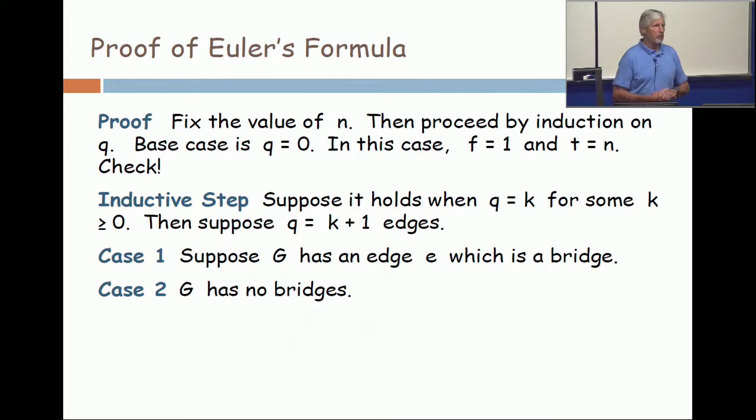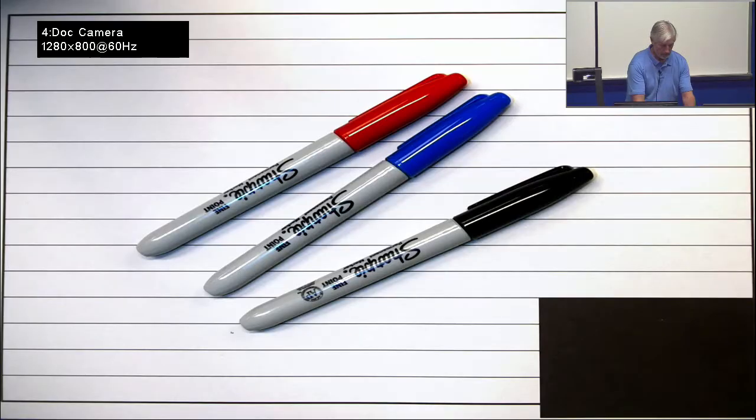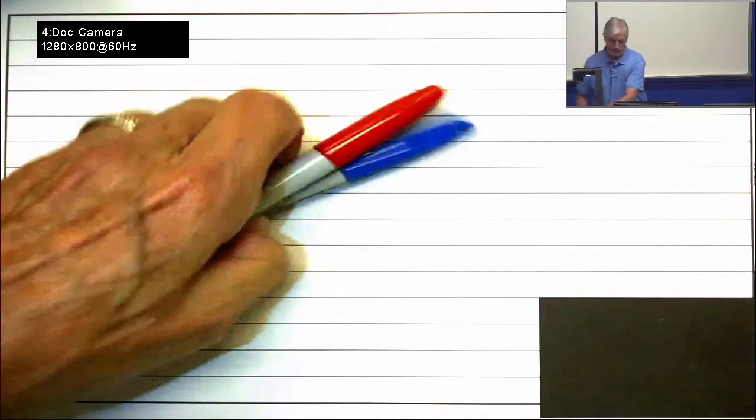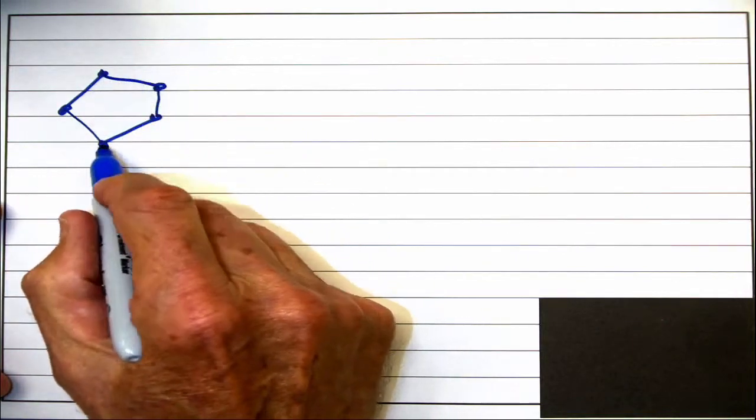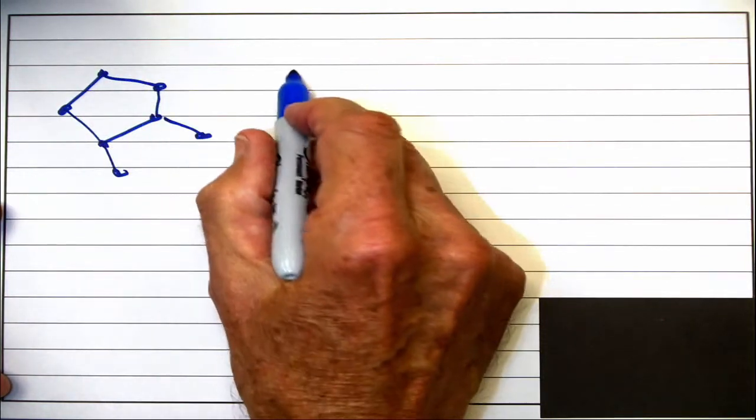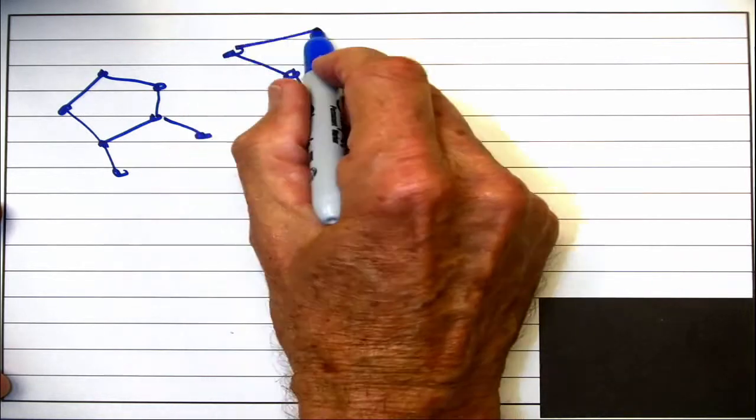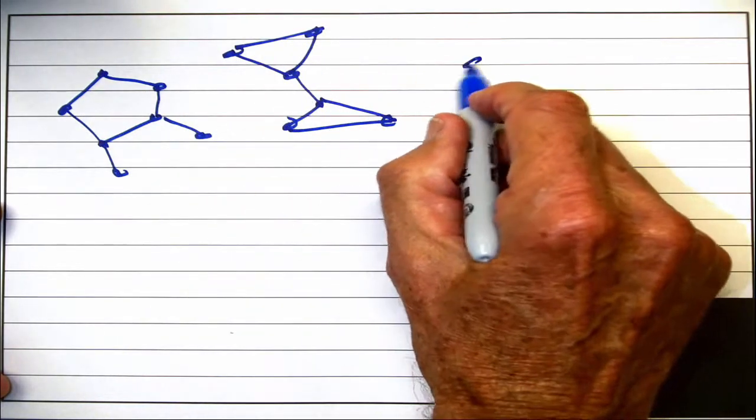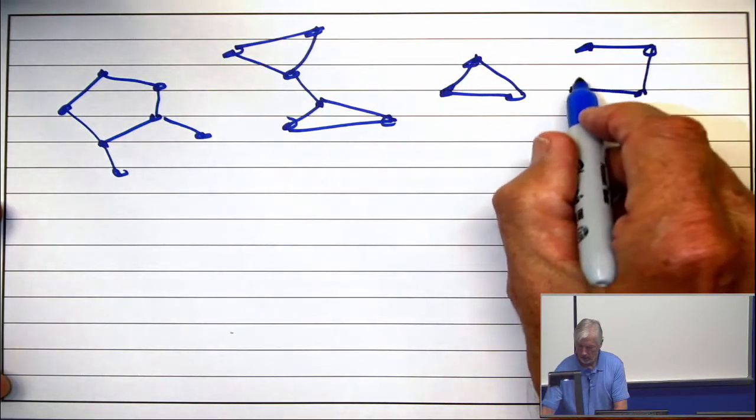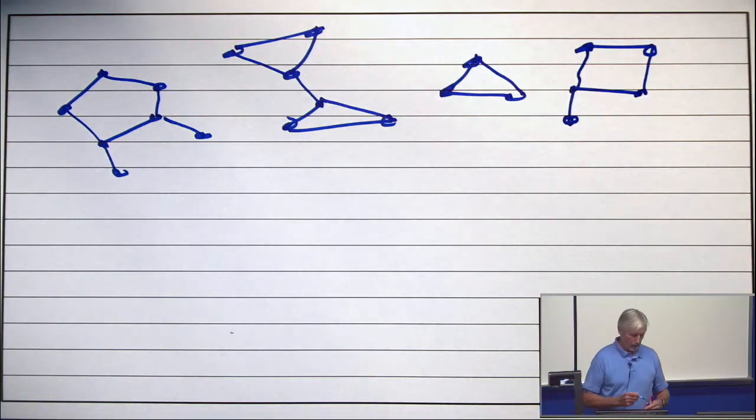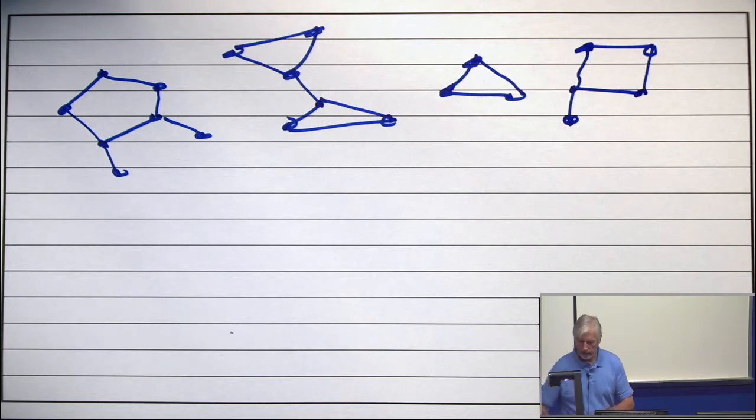In case one, there is an edge which is a bridge. So I have a plane graph. Now, find a bridge. There's bunches of them, but find one. I'll take this one.